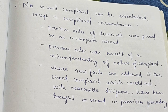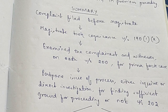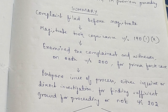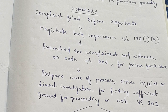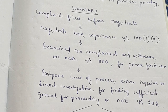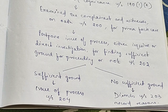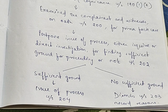To summarize: when a complaint is filed before the magistrate, the magistrate takes cognizance under Section 190(1)(a) — cognizance upon a complaint. He then examines the complainant and witnesses present, if any, on oath under Section 200 to find out any prima facie case. Then he postpones the issue of process and either inquires himself or directs an investigation to find out whether sufficient ground for proceeding is present or not, under Section 202. If there is sufficient ground, he will issue a process under Section 204. If there is no sufficient ground, he will dismiss the complaint under Section 203 and record the reasons for doing so. Hope you all liked the video — please like and subscribe, thank you everyone.